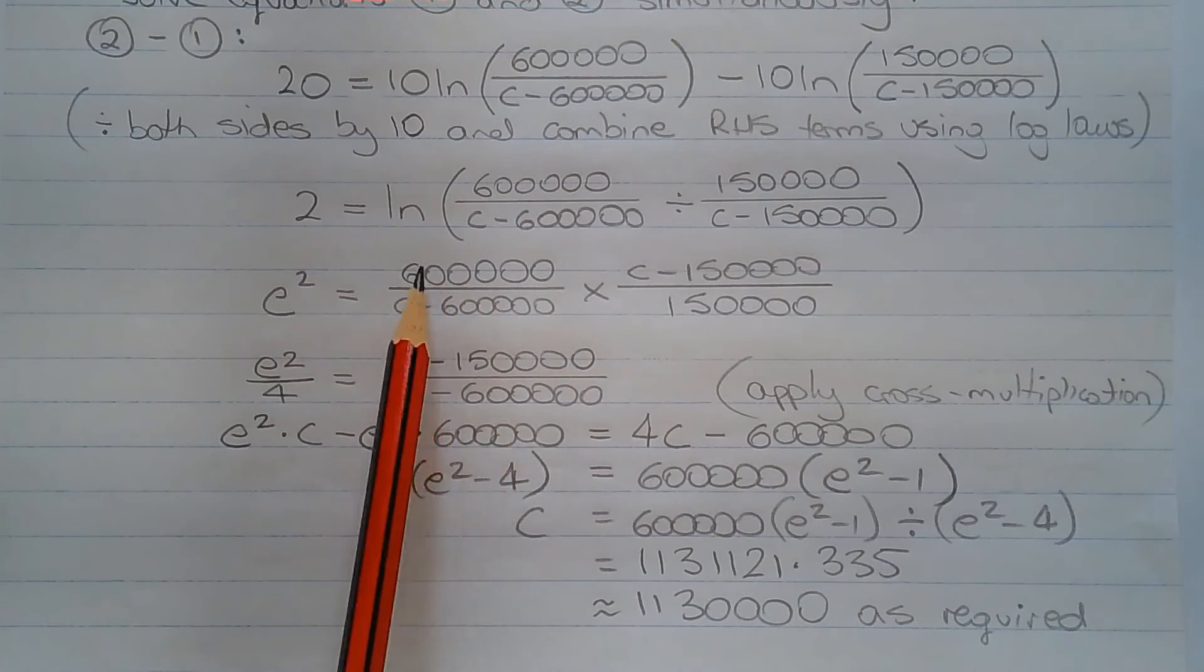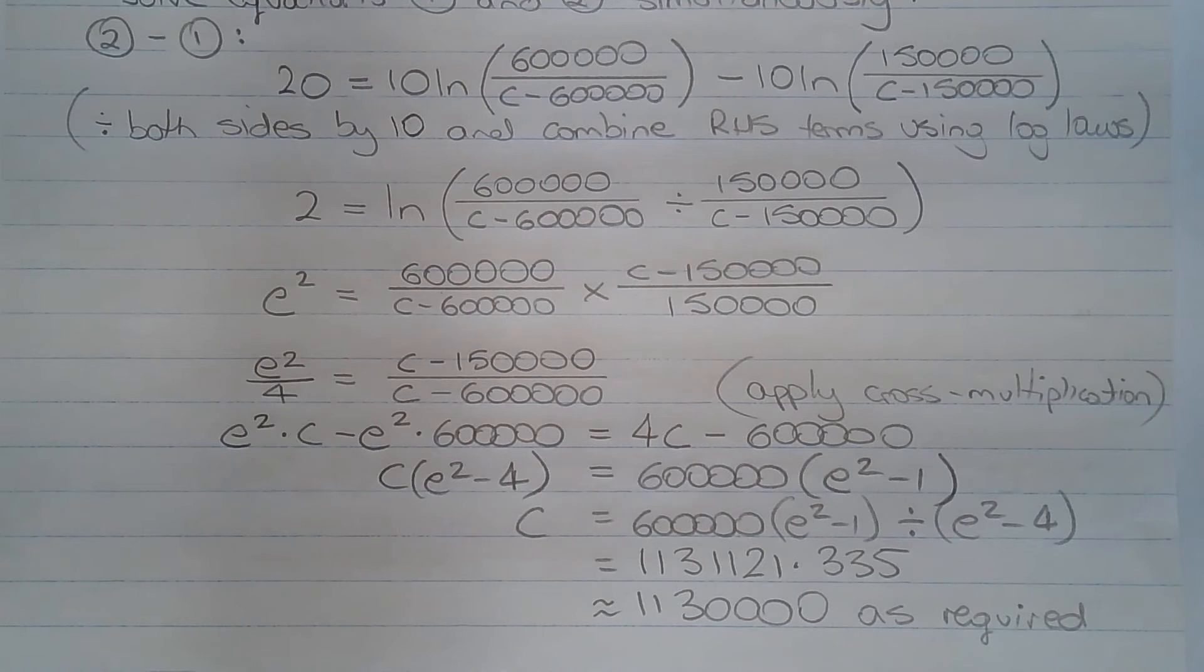Now we have 600,000 over 150,000 equals 4. So dividing both sides by 4, we get e squared over 4 equals (c minus 150,000) over (c minus 600,000).